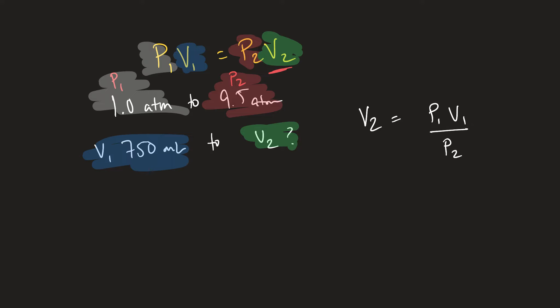I will plug in those numbers as I see it. So V₂ is equal to P₁, which is 1.0 ATM, times V₁, which is 750 milliliters, divided by P₂, which is 9.5 ATM.